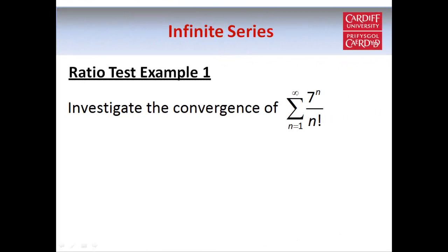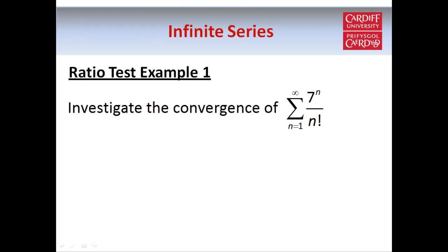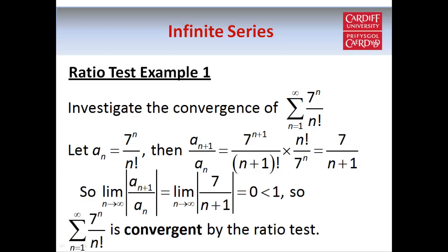Suppose we want to examine the convergence of the series 7^n over n factorial. We start by calculating the ratio a_{n+1} over a_n, and using the rules of indices and the rules of factorials, we find that a_{n+1}/a_n is equal to 7/(n+1). Taking the limit as n tends to infinity gives 0, which is less than 1, so by the ratio test the series is convergent.